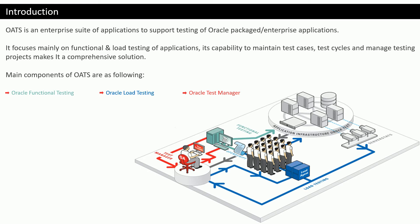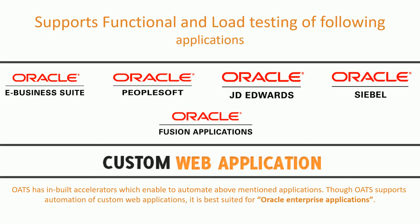I would like to give an idea of which kinds of applications Oracle Application Testing Suite is primarily used for. The most important one is Oracle E-Business Suite, then PeopleSoft, JD Edwards, Siebel, and even Fusion Applications. So it is primarily focused on automating all Oracle enterprise applications, but it also has good support for custom web applications.